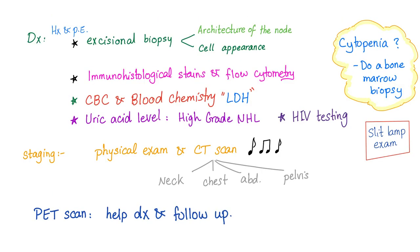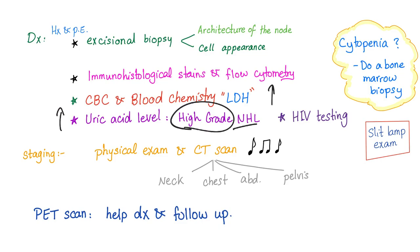To diagnose diffuse large B-cell lymphoma, you need an excisional biopsy to detect the architecture of the node and the cell appearance. The cells are large, since the name is diffuse large B-cell lymphoma. You need CBC, blood chemistry, and LDH, which will be high. Uric acid level will also be high, because this is a high-grade aggressive lymphoma. HIV testing is required as well.